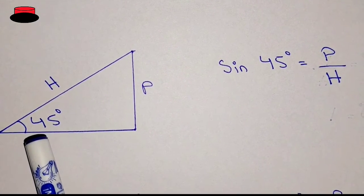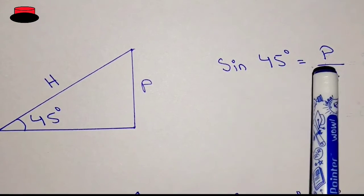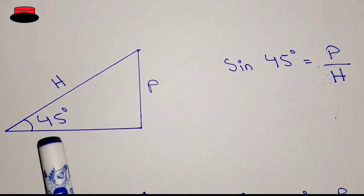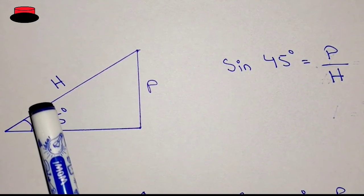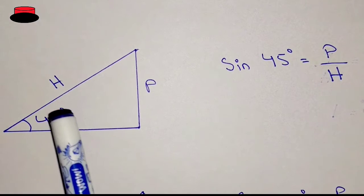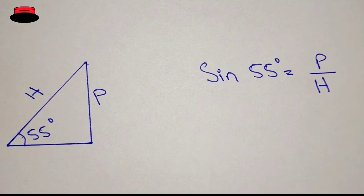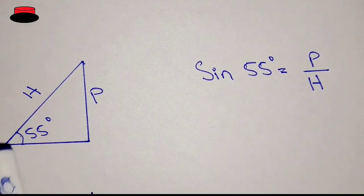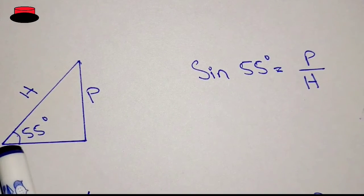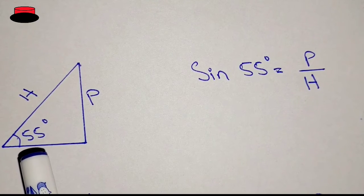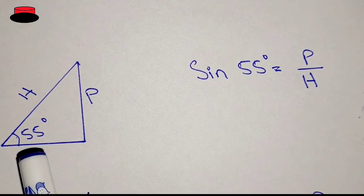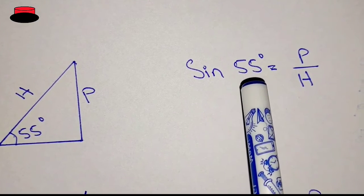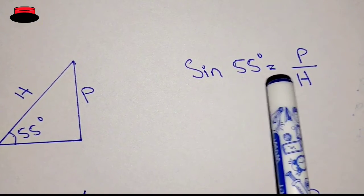So we can say that sin 45, or sin theta, is equal to perpendicular upon hypotenuse. Now if we reduce the size of the base, definitely the size of the hypotenuse will also be reduced. You can see that as the base is reduced, the hypotenuse is also reduced and the angle increases — let's suppose to 55 degree.